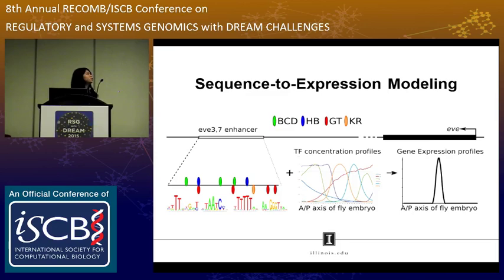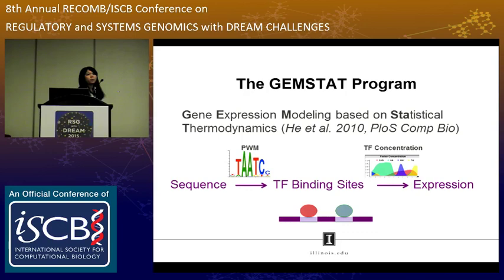In 2010, our group proposed a model called GEMSTAT. GEMSTAT takes the enhancer sequence as input, uses position weight matrices (PWM models) to annotate TF binding sites, and uses TF concentration profiles and thermodynamic-based statistical methods to predict gene expression. In the step of predicting TF binding sites, GEMSTAT uses position weight matrices.